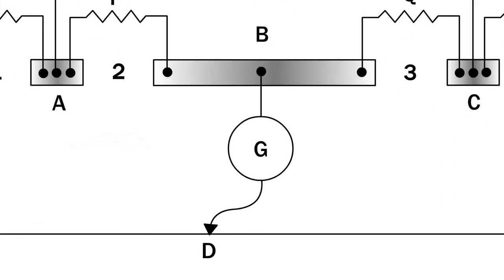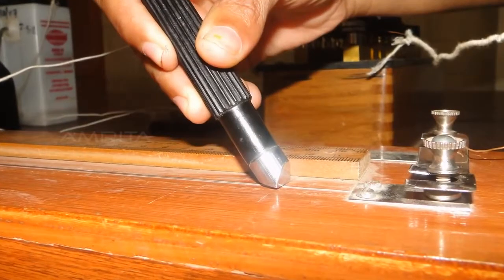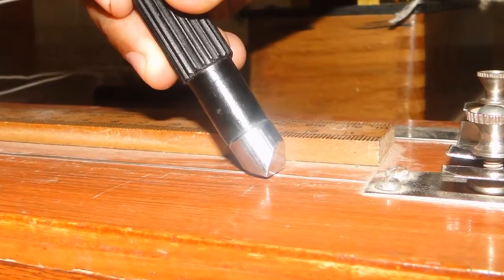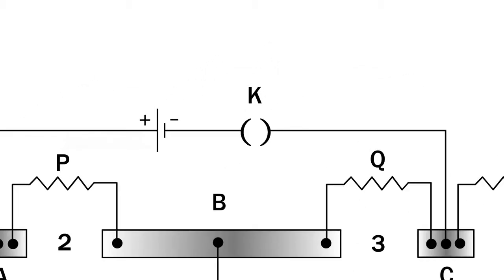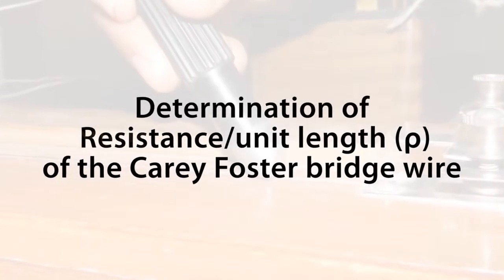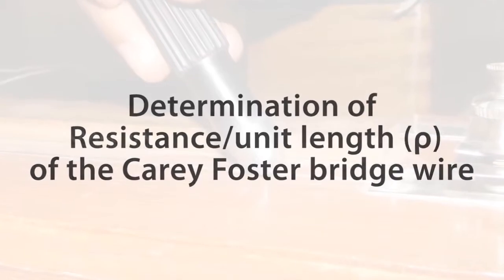A lead accumulator with a key K in series is connected between terminals A and C. Procedure: Determination of resistance per unit length ρ of the Carry Foster bridge wire. Make the circuit connections.